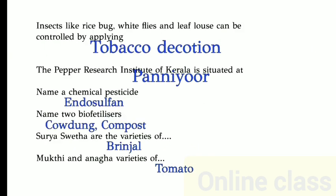Insects like rice bag, wildflowers, and leaf flowers can be controlled by plain tobacco decoration. The pepper research institute of Kerala is situated at Panyor. Name of chemical pesticide: endosulfan. Name of bio fertilizer: cow dung compost.